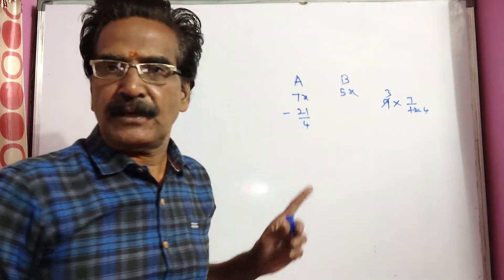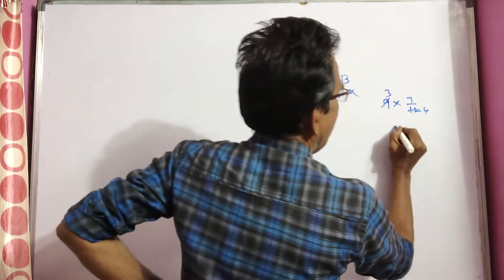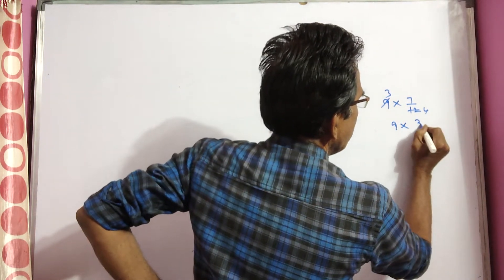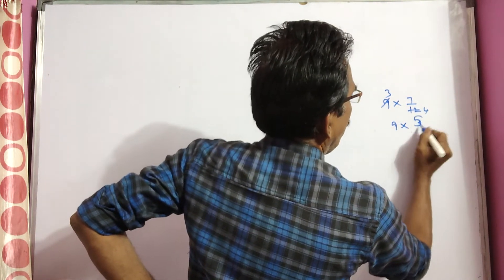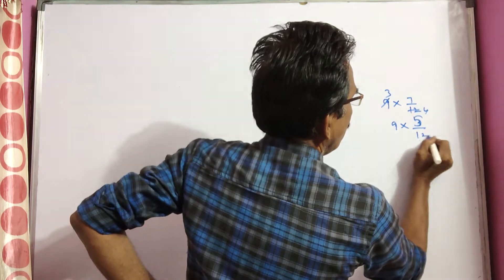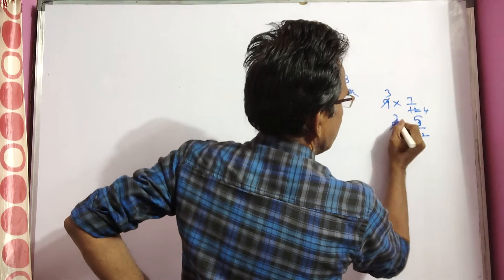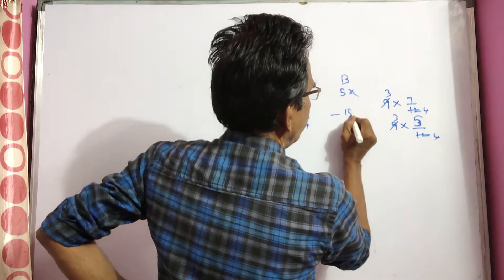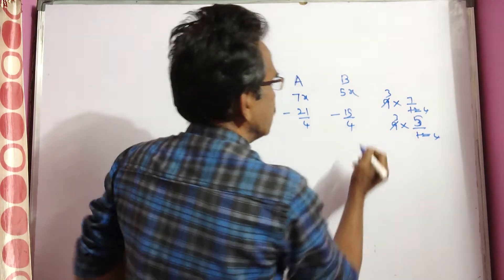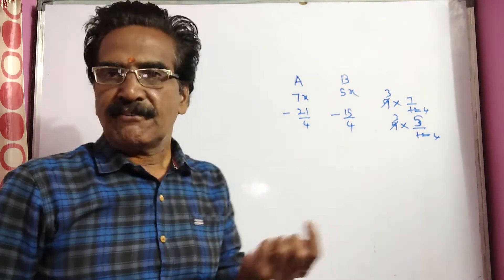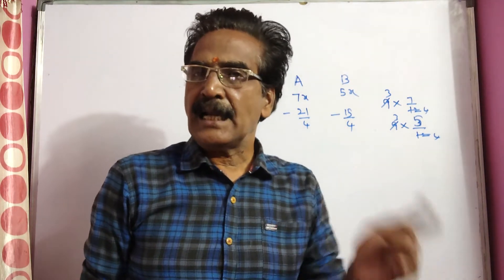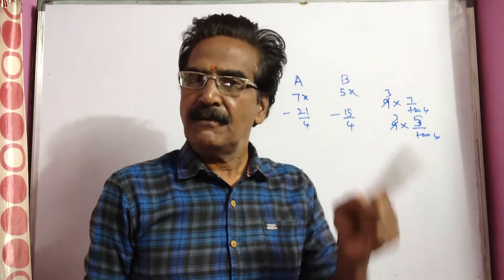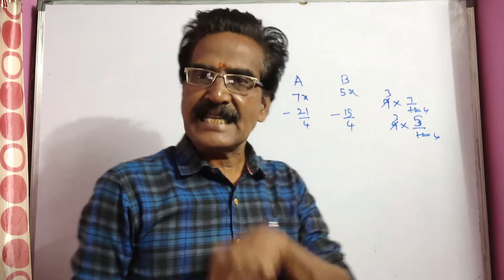And 9 into 5/12 — that is 15/4 liters of liquid B comes out. And now 9 liters of liquid B is added.